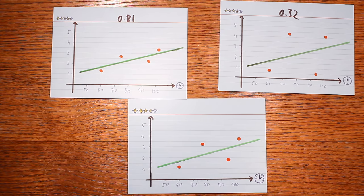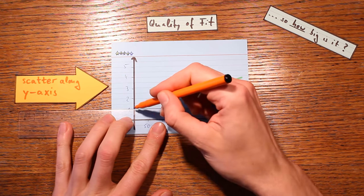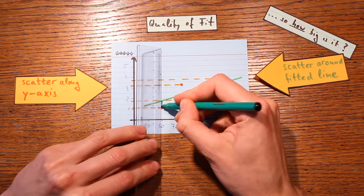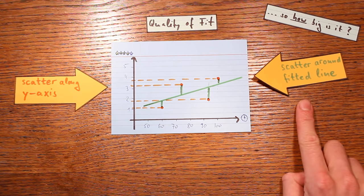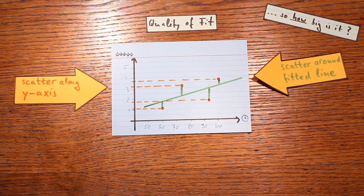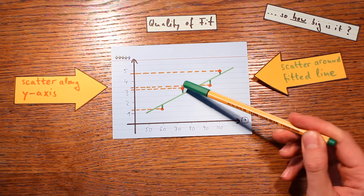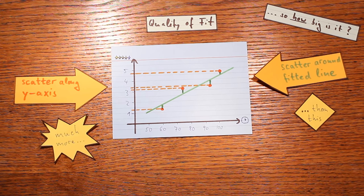How does the correlation coefficient figure this out? It compares two things. The first is the scatter along the y-axis — how the y-values scatter. The second is the scatter of the data around the fitted line, corresponding to the distances from the points to the line. The rule is: the more y-axis scatter there is compared to scatter around the fitted line, the stronger the correlation. In one example there's a lot of y-axis scatter but very little scatter around the fitted line, giving a correlation of 0.95 — a really strong positive correlation.